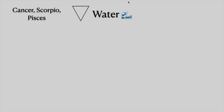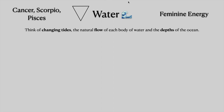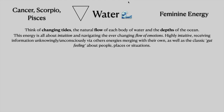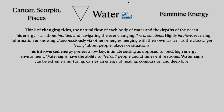Next up is water. This is Cancer, Scorpio, and Pisces — feminine energy. Think of changing tides, the natural flow of each body of water, and the depths of the ocean. This energy is all about intuition and navigating the ever-changing flow of emotions. Highly intuitive, receiving information unknowingly and unconsciously via other energies merging with their own, as well as the classic gut feeling about people, places, or situations. This introverted energy prefers a low-key, intimate setting, as opposed to loud, high-energy environments. Water signs have the ability to feel out people and, at times, entire rooms. Water signs can be extremely nurturing and carry an energy of healing, compassion, and deep love.